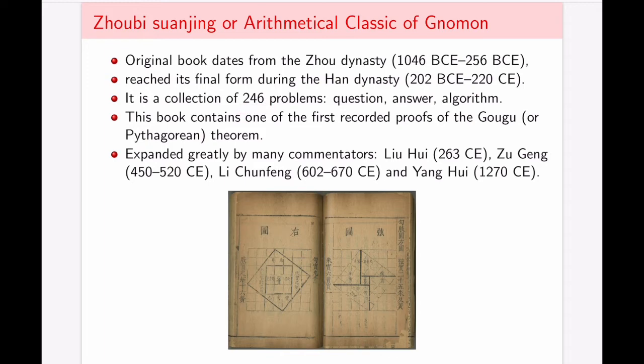It is a collection of 246 problems. And again, in the same kind of layout of question, answer, and then algorithm or justification. This book contains one of the first recorded proofs of the Gugu theorem, or what we know as Pythagorean theorem. Of course, they don't call it Pythagorean theorem.